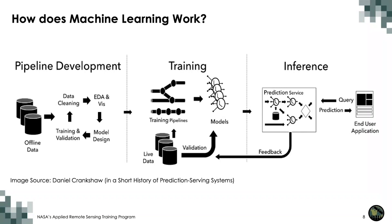The prediction and result are checked against each other, and a numerical score is calculated. If the prediction and result don't match well, the method is retrained multiple times until the data scientists get the desired outcome. This enables the machine learning method to continually learn on its own and produce optimal answers gradually, increasing in accuracy over time.